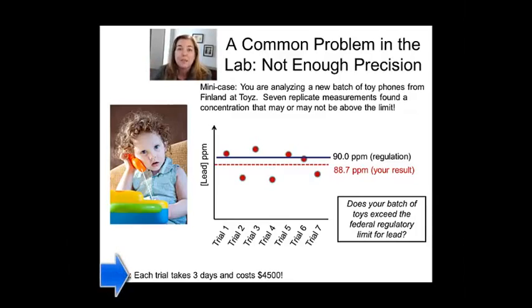The problem is in the real world that often takes a lot of time and costs a lot of money. And your boss wants to know if the toys are good to go in like a day. So you don't really have time to do a hundred measurements. You got to come up with some other way to deal with the random error that's present in your signal.